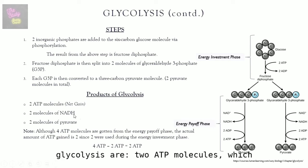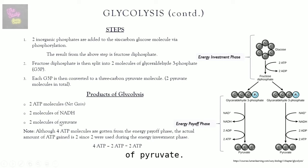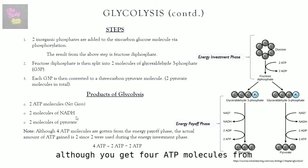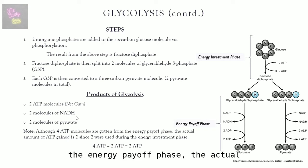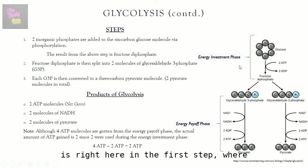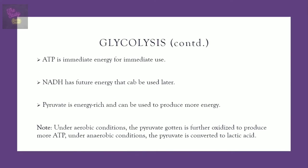The products of glycolysis are: two ATP molecules (net gain), two molecules of NADH, and two molecules of pyruvate. The net gain is two ATP because glycolysis actually produces four ATP molecules in the energy payoff phase, but two were used during the energy investment phase — the first step where two ATP molecules are consumed.